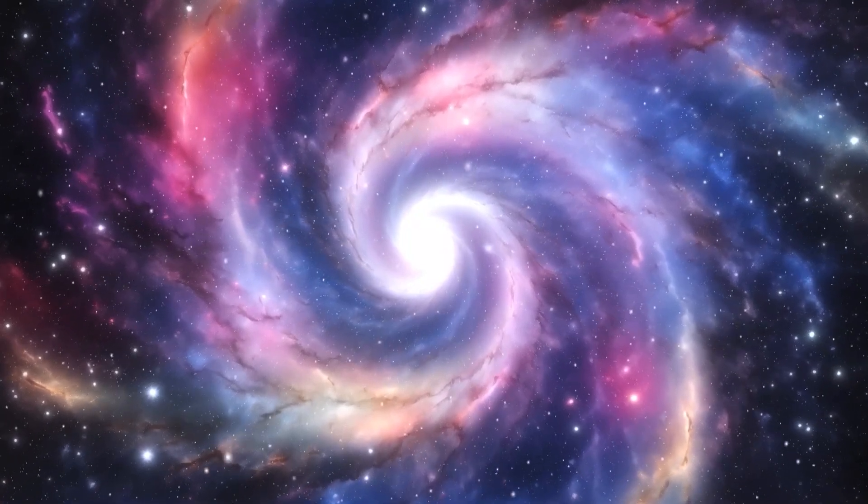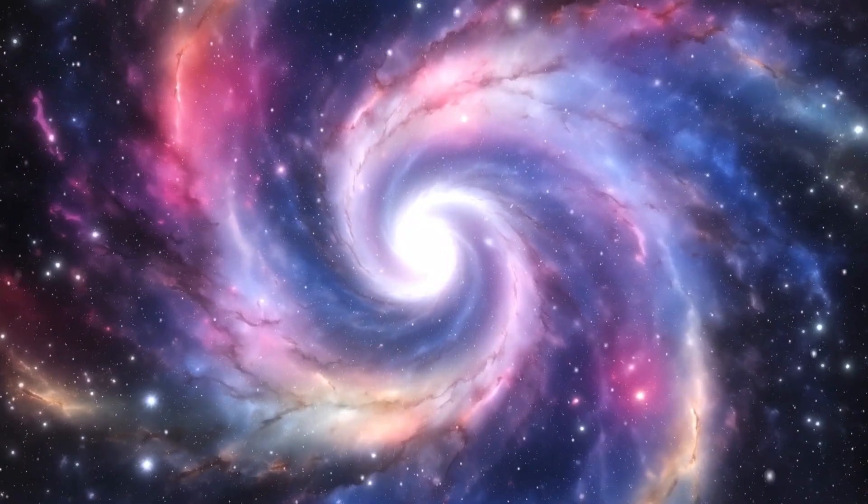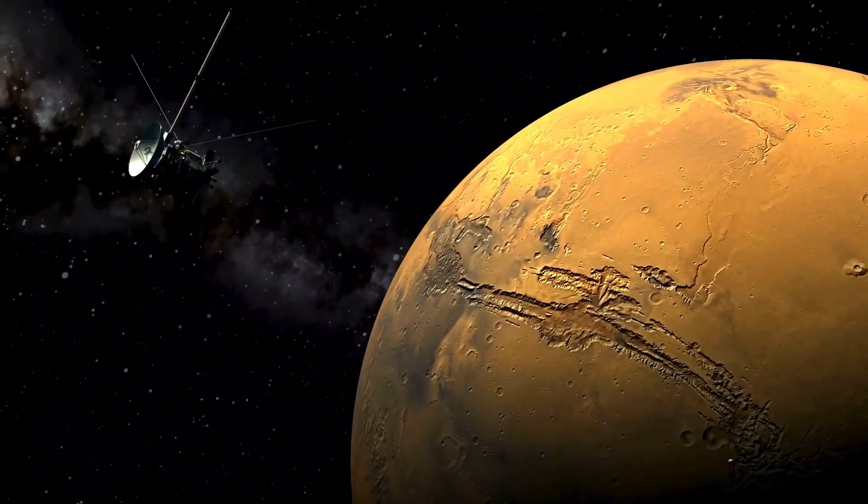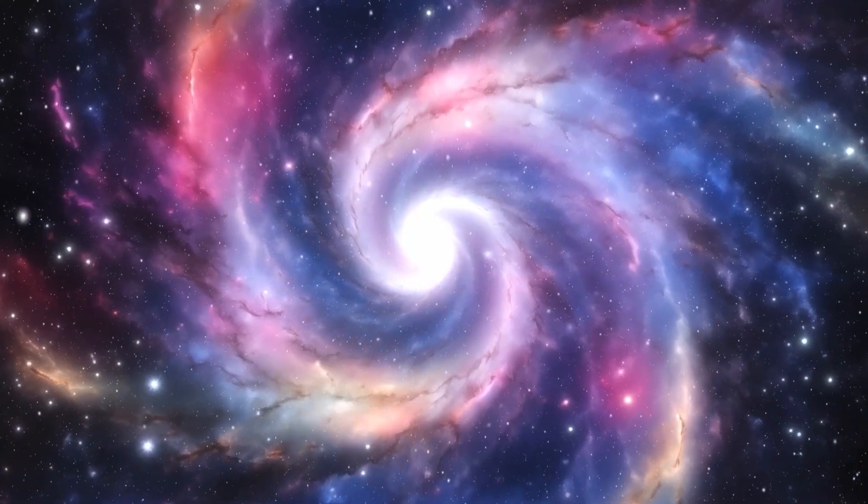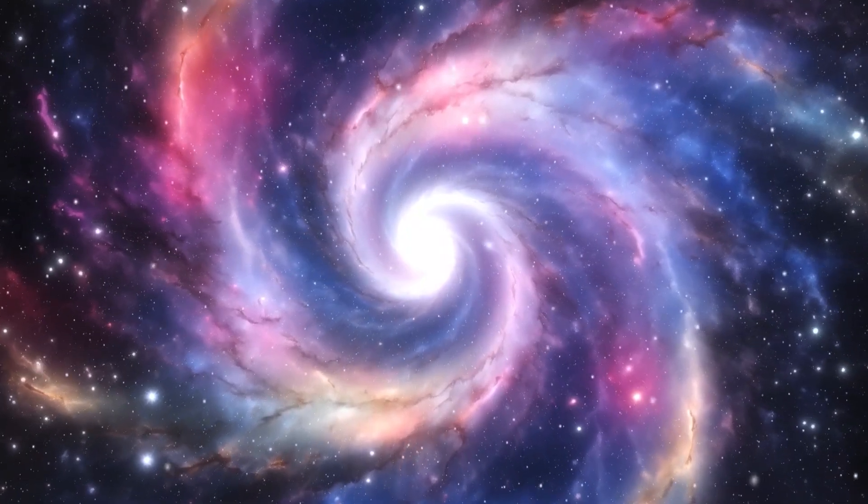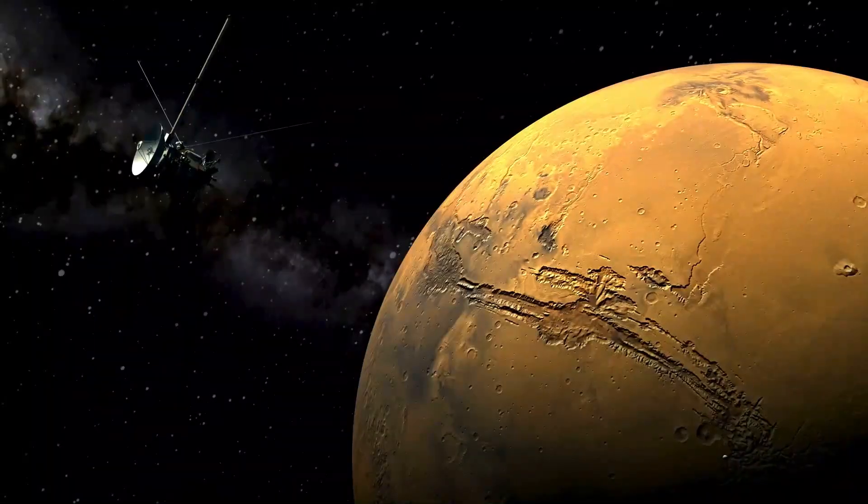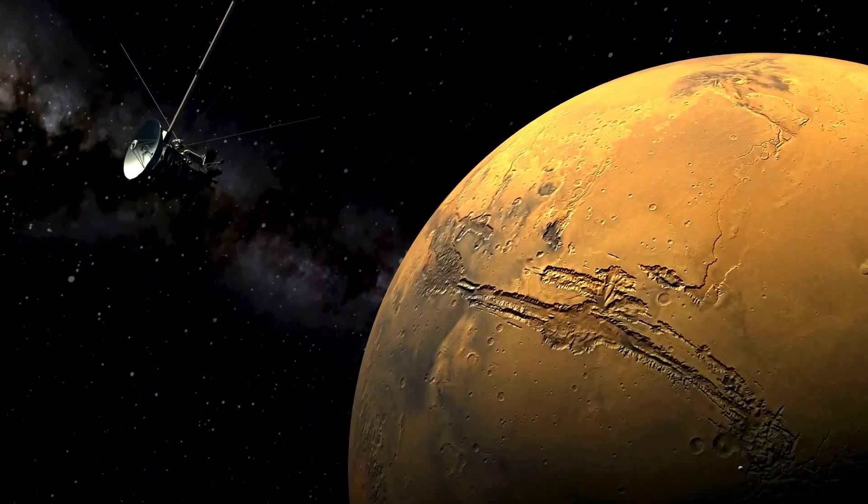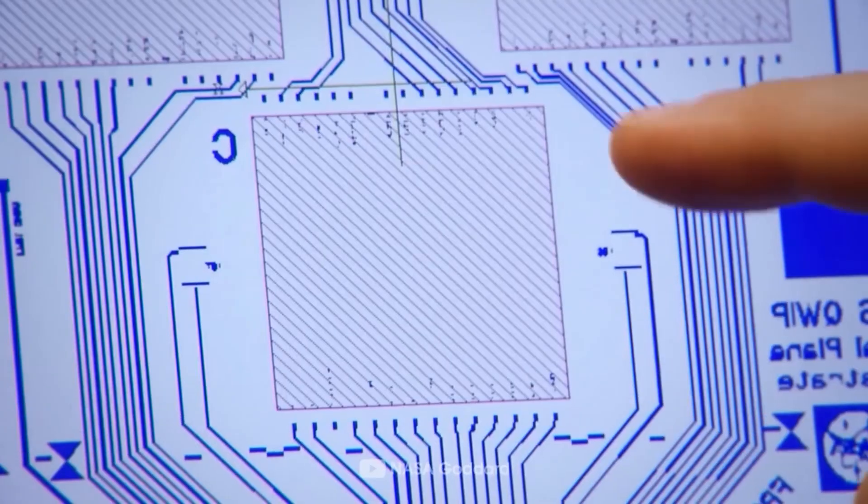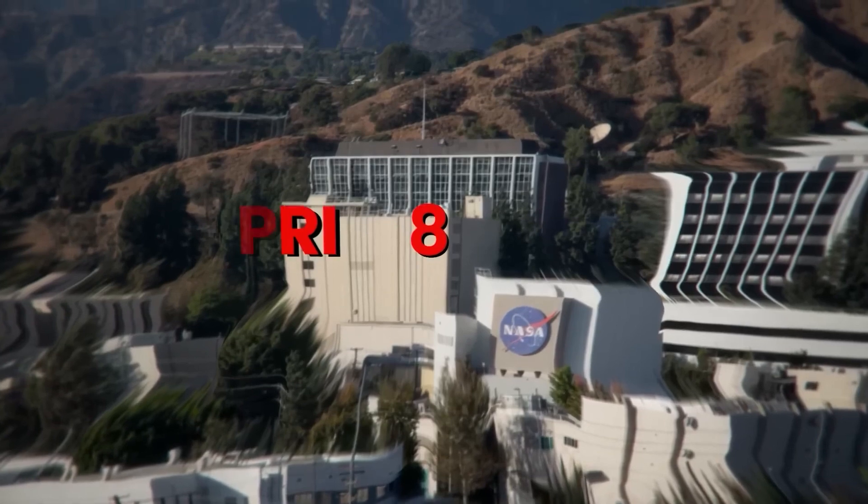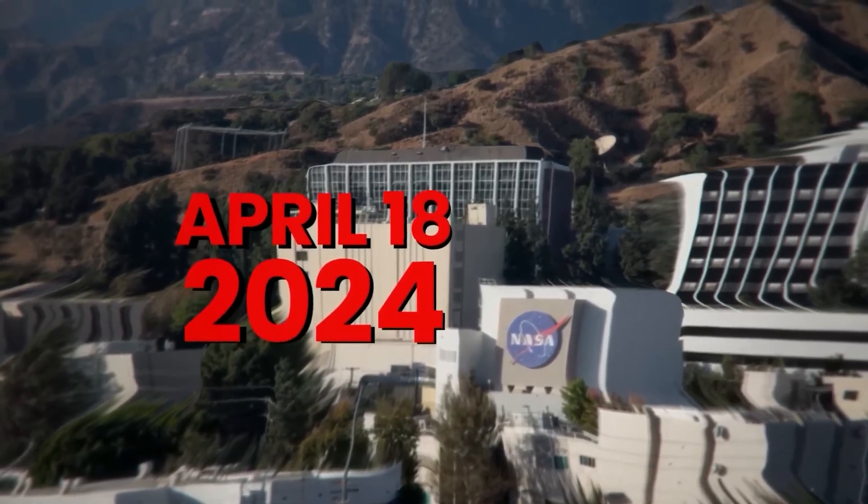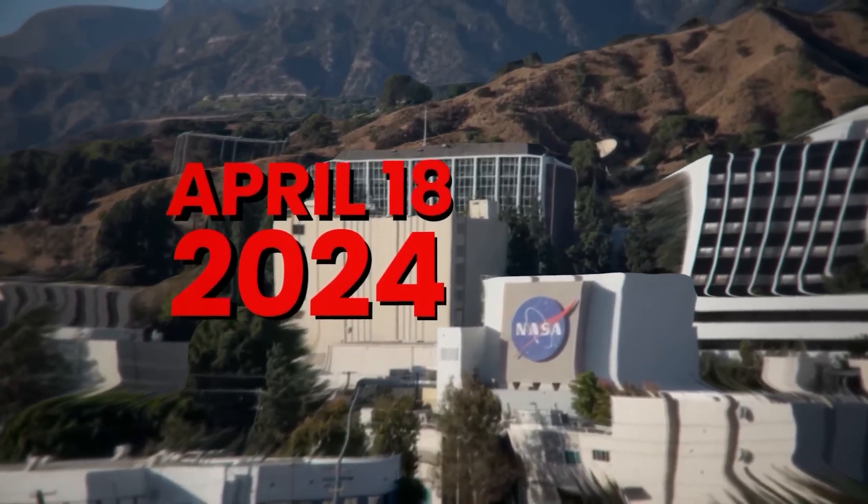The importance of Jezero Crater cannot be overstated. Its geological features indicate that it once held a lake, making it a prime location for studying ancient microbial life. Scientists believe that if Mars ever supported life, signs of it could be preserved in the clay minerals found in the crater. Perseverance is equipped with cutting-edge instruments like SHERLOC and PIXL, which analyze rock samples at a microscopic level, searching for biosignatures.